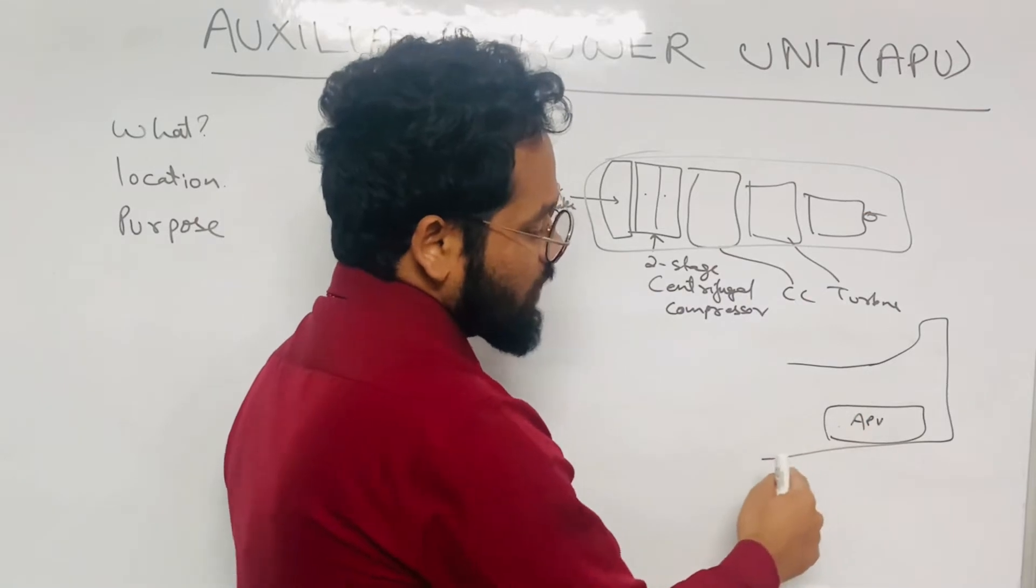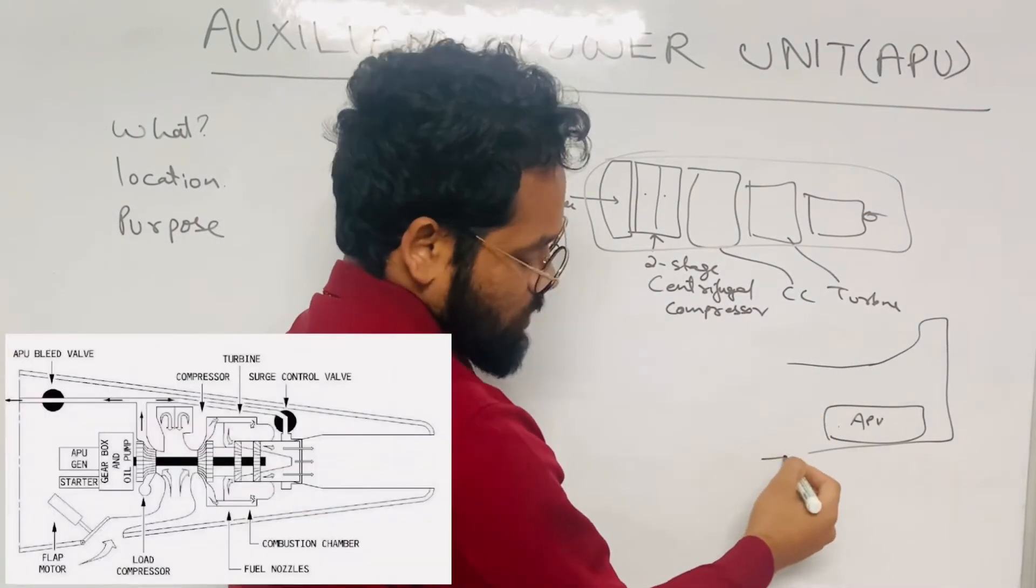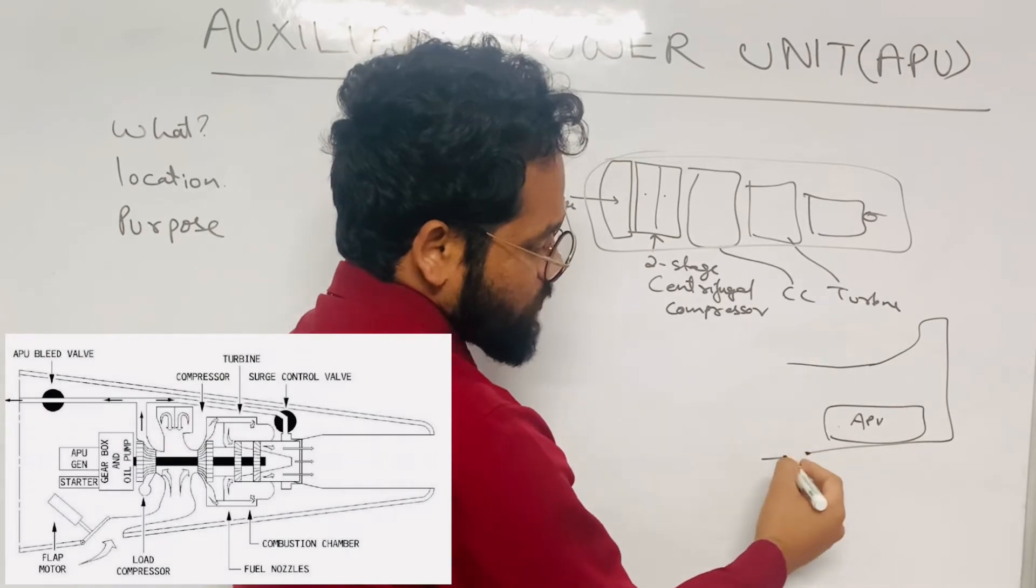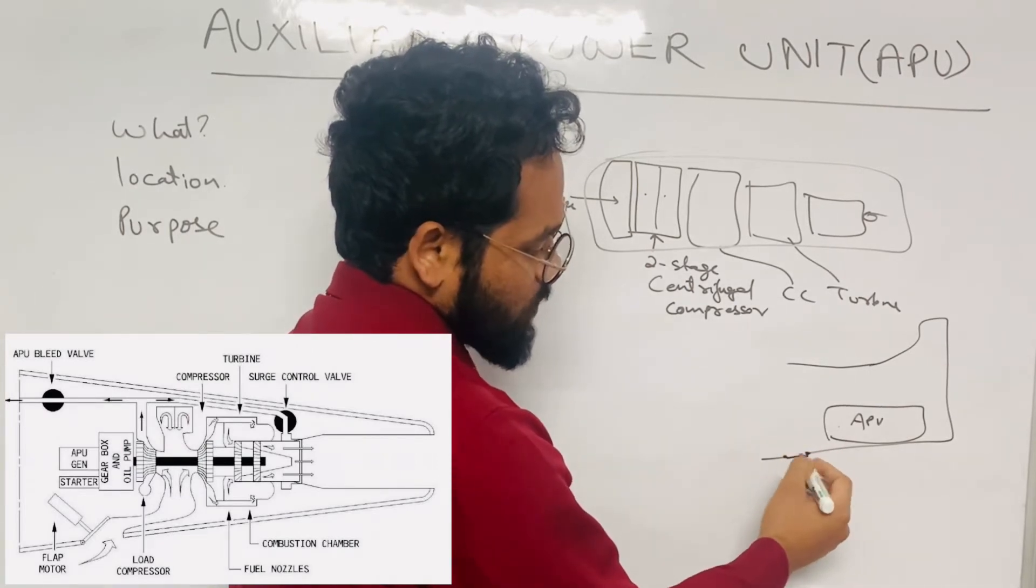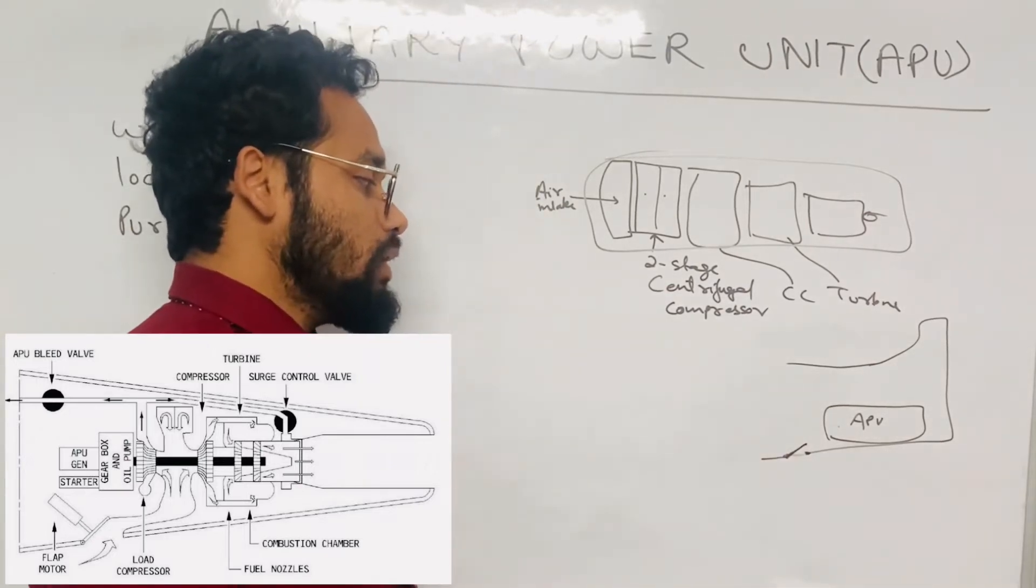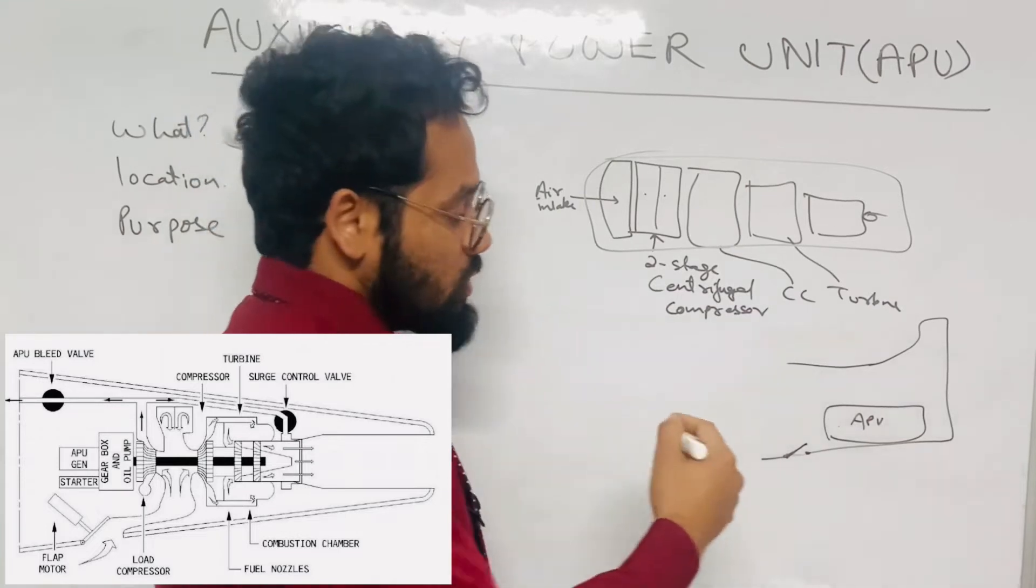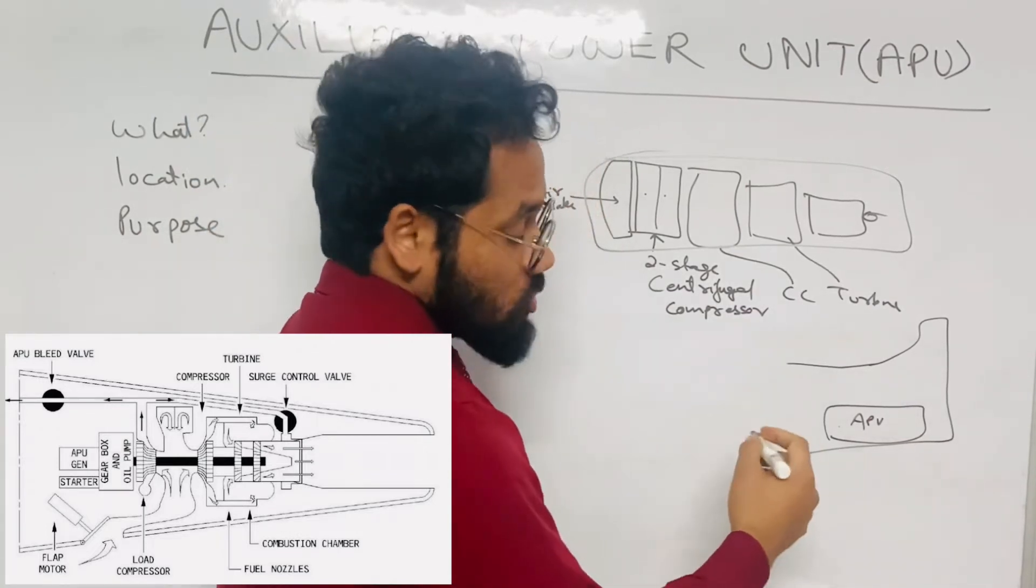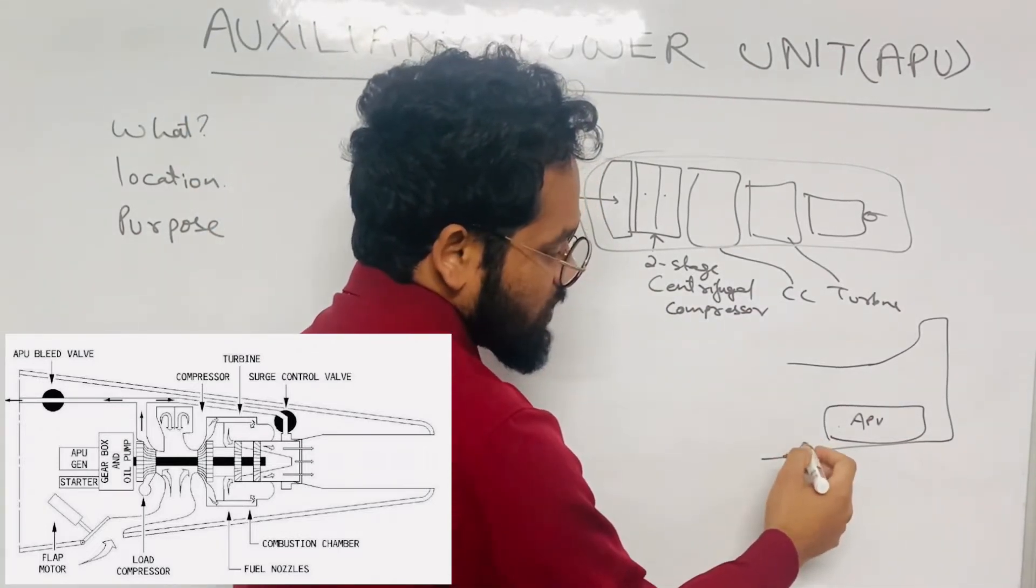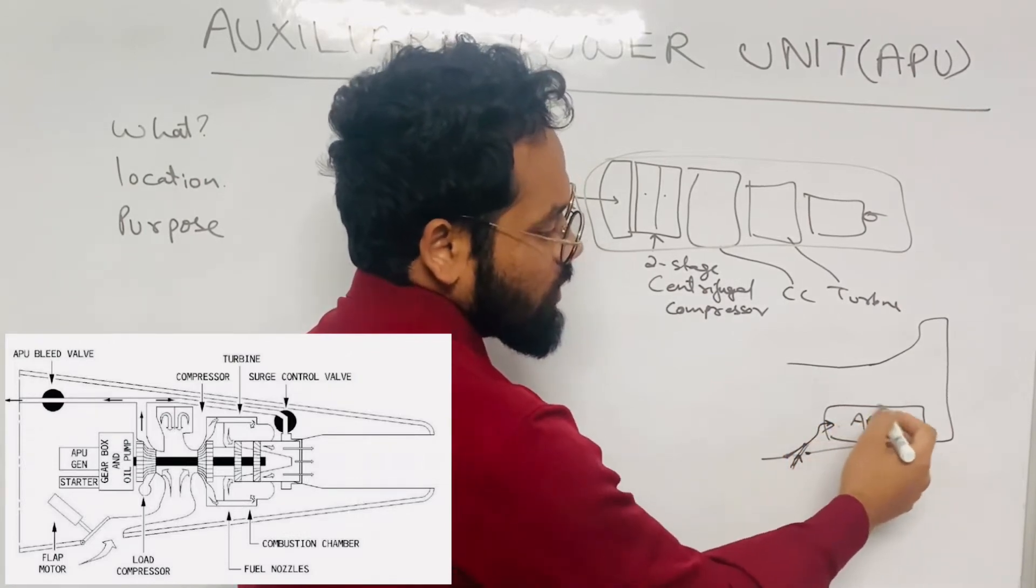Now the question here is how will the APU get the air if it is placed inside the tail cone. So for that you must have seen in the bottom surface of the fuselage there will be a small flap. This flap used to open in an airplane like Airbus A320 whenever you press one of the push buttons, the master switch. This air intake flap will open and airflow will get in like this into the APU.